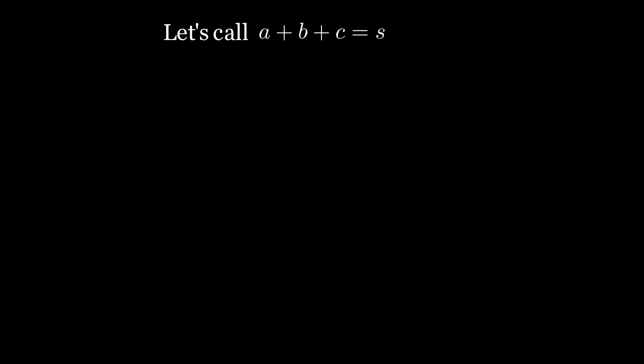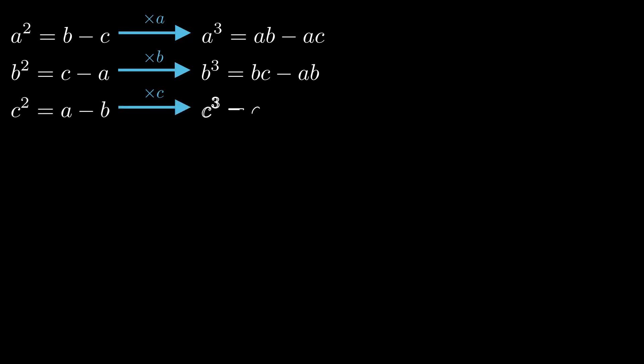Let's start by defining that the sum of A, B, and C is equal to S. Now, if we add up all the equations given in the problem, we get A squared plus B squared plus C squared equals zero. Next, let's multiply the equations by A, B, and C, respectively, and add them all together. You can see all the terms on the right-hand side cancel each other out. This gives us A cubed plus B cubed plus C cubed equals zero.